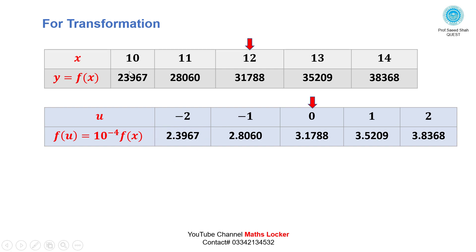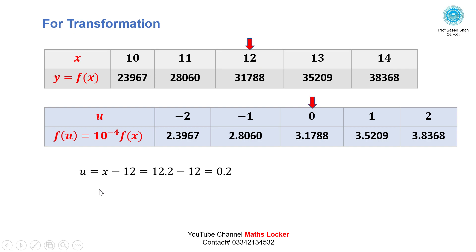The transformation is: 2.3967 = 2.3967 × 10⁴, so f(u) = 10⁻⁴ · f(x). The value of u = x minus 12, since 12 is the center. For x=12.2, u = 12.2 - 12 = 0.2. So we need to calculate f(u) = f(0.2) using the finite difference table.